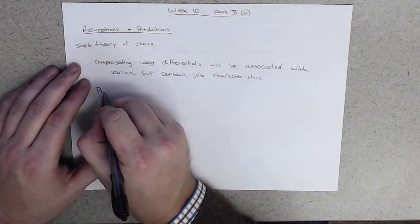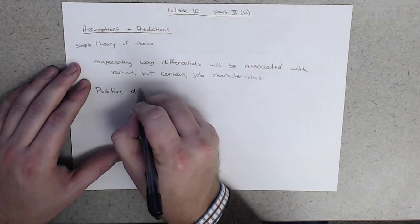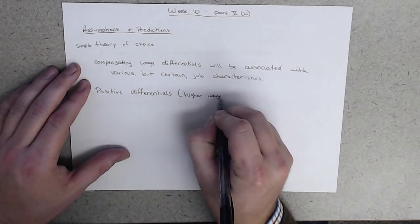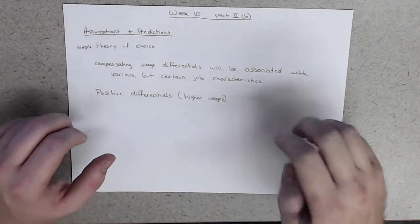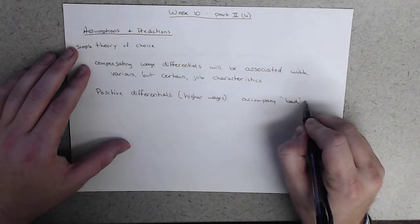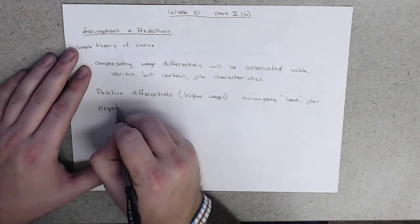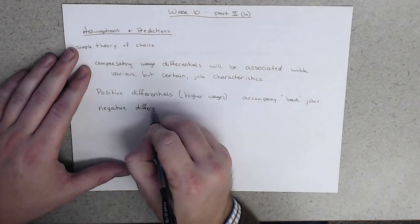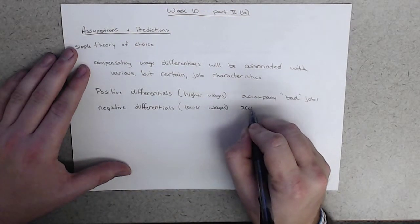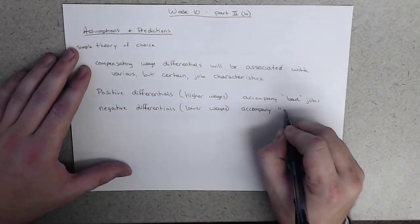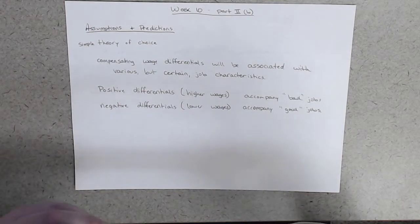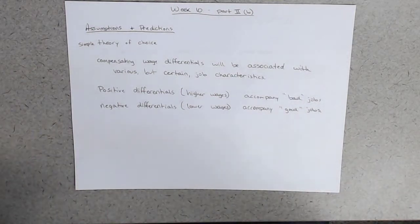Compensating wage differentials means there will be a wage difference across comparable jobs that compensates the worker for the things that are not the same. Positive differentials, higher wages, will accompany bad jobs, and negative differentials, lower wages, will accompany good jobs.